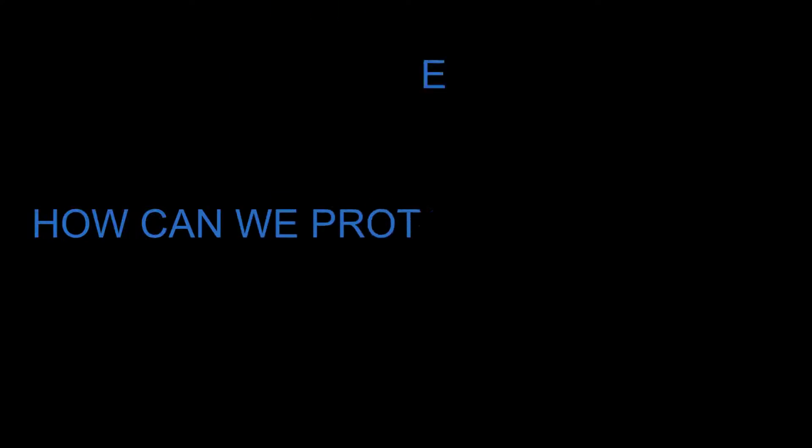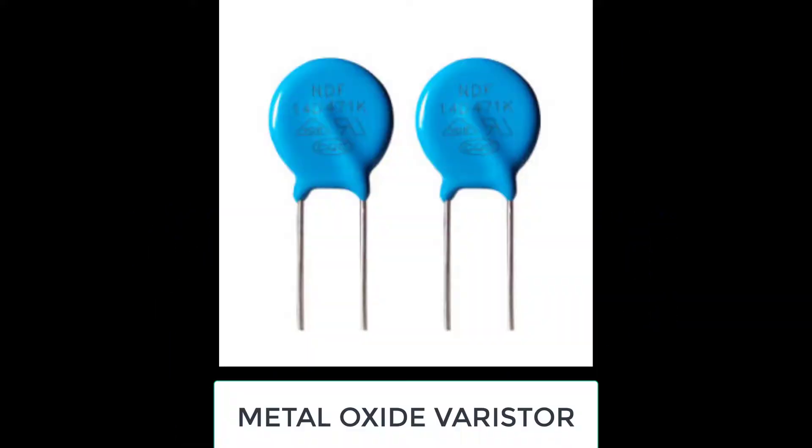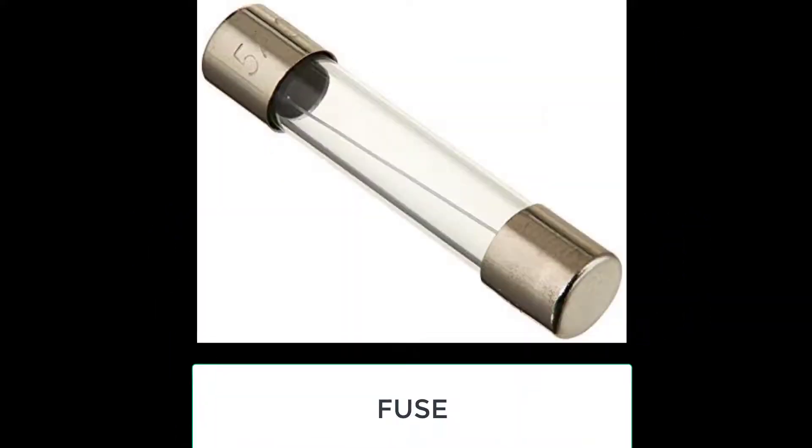Today we will see how we can protect our circuit from high voltage spikes using metal oxide varistor and a fuse.